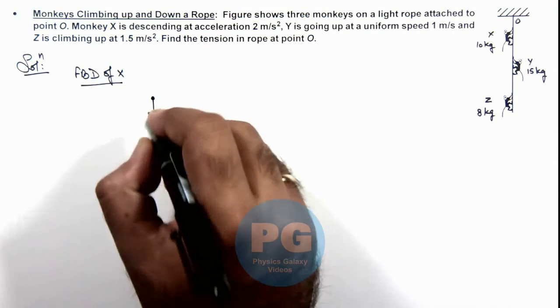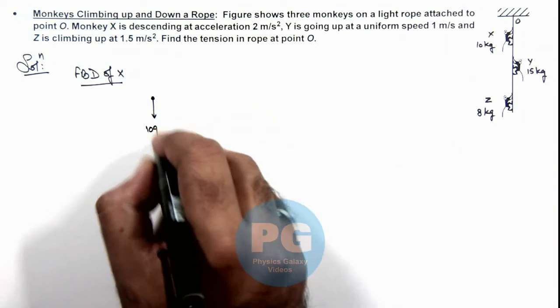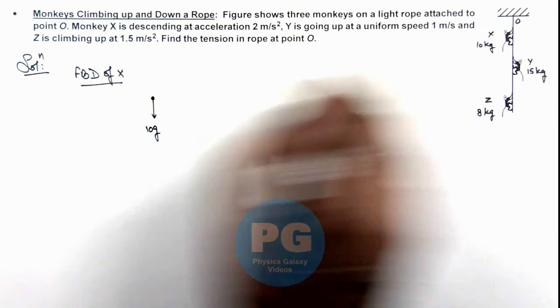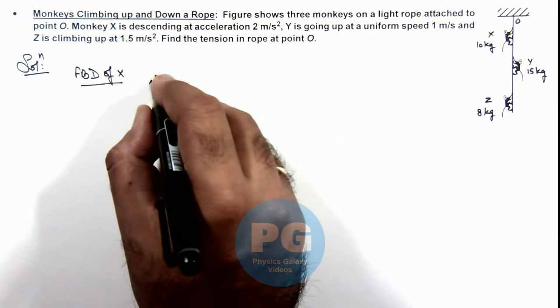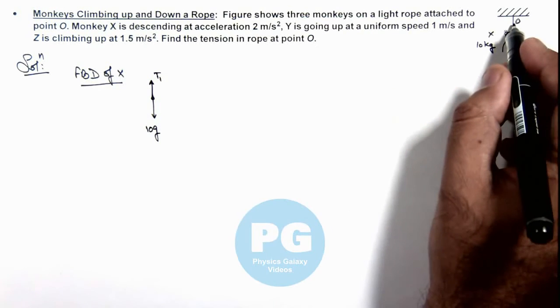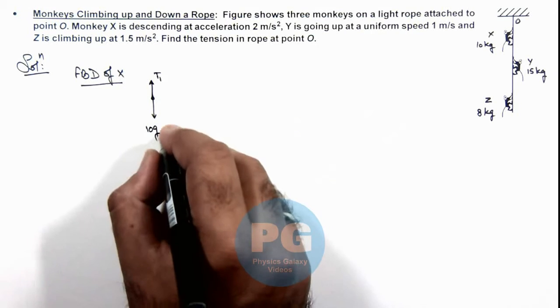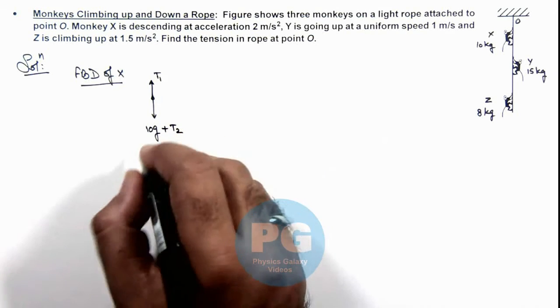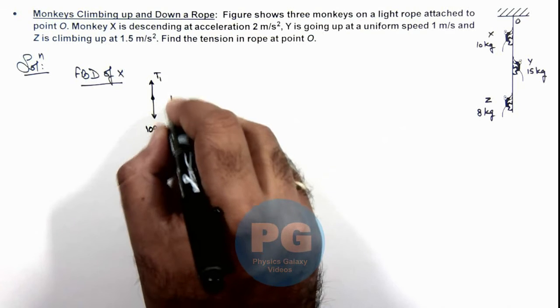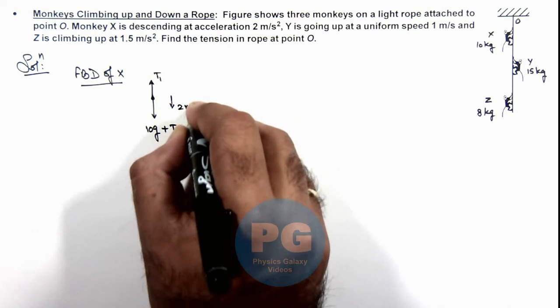its weight is acting in downward direction which is 10g. And upward is the tension acting on it, say tension here in the rope is T1 and downward tension is T2. So T2 will act over here, and it is descending at an acceleration of 2 meters per second squared.